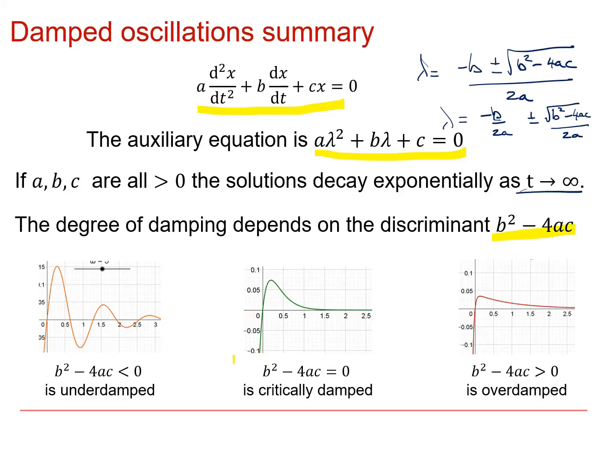The degree of damping depends on the discriminant b squared minus 4ac. And there are three possibilities for this. Either the discriminant is less than 0, in which case it's underdamped and there will be oscillations before it finally decays. Or b squared minus 4ac is equal to 0, in which case we say it's critically damped, the borderline between this and this situation in which b squared minus 4ac is greater than 0 and it's overdamped. There's no oscillation and the motion decays over time.